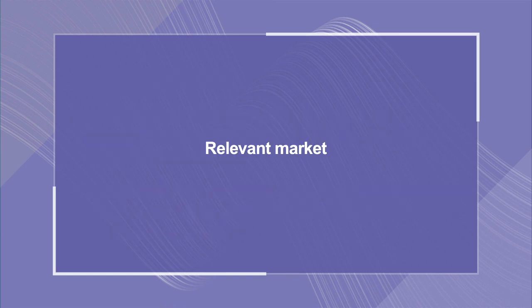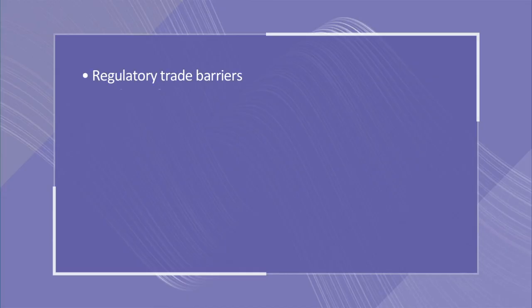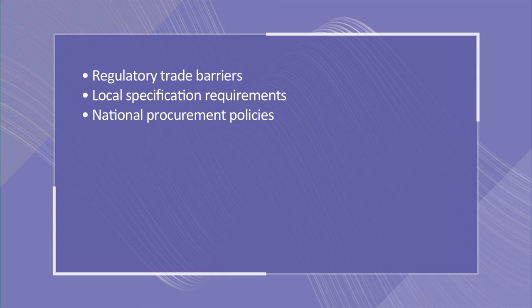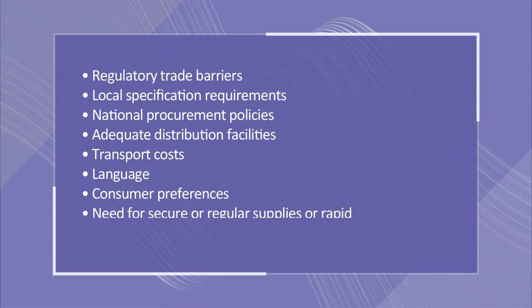We now try and understand the meaning of relevant market. For determining whether a market constitutes a relevant market for the purposes of the Competition Act, we need to understand the concept of relevant geographic market and relevant product market. While determining the relevant geographic market, certain factors need to be taken into account. These are: regulatory trade barriers, local specification requirements, national procurement policies, adequate distribution facilities, transport costs, language, consumer preferences, and need for secure or regular supplies or rapid after-sales services.